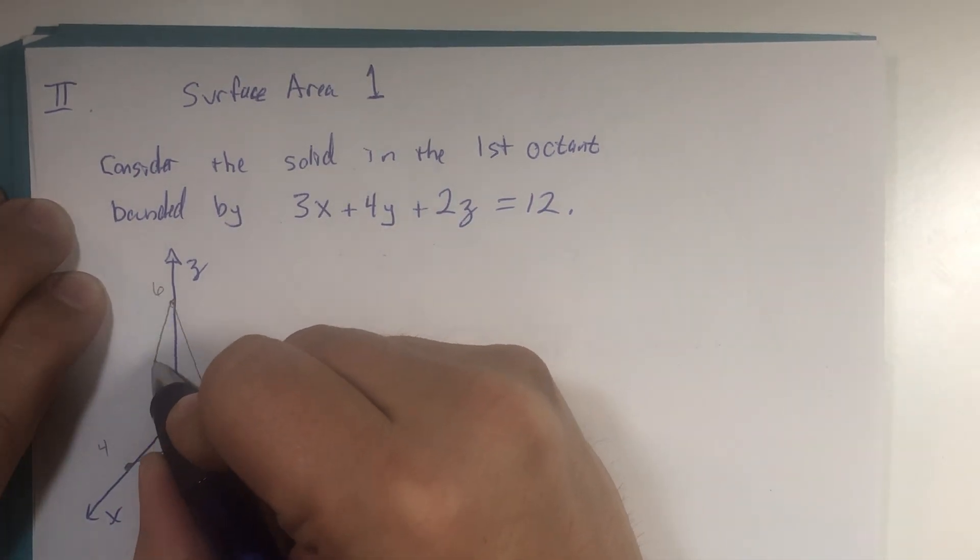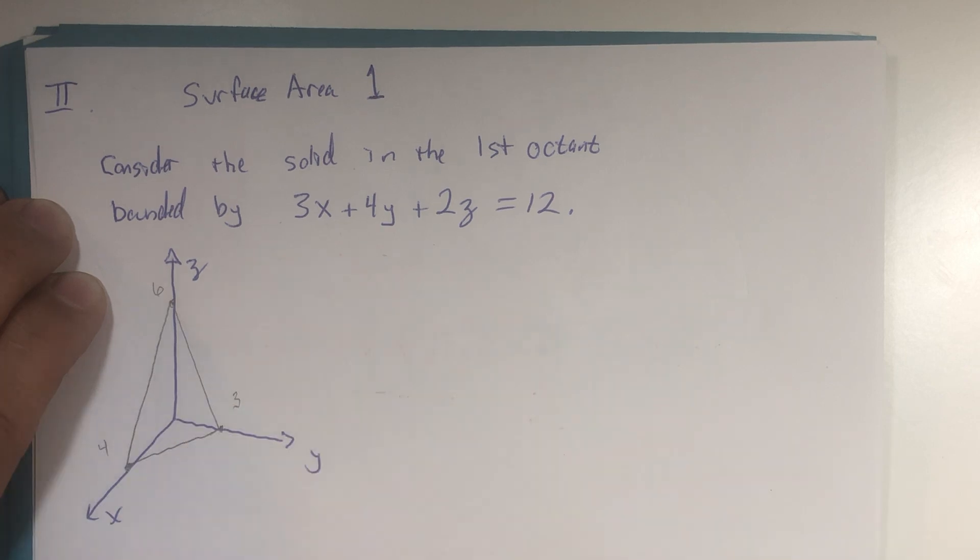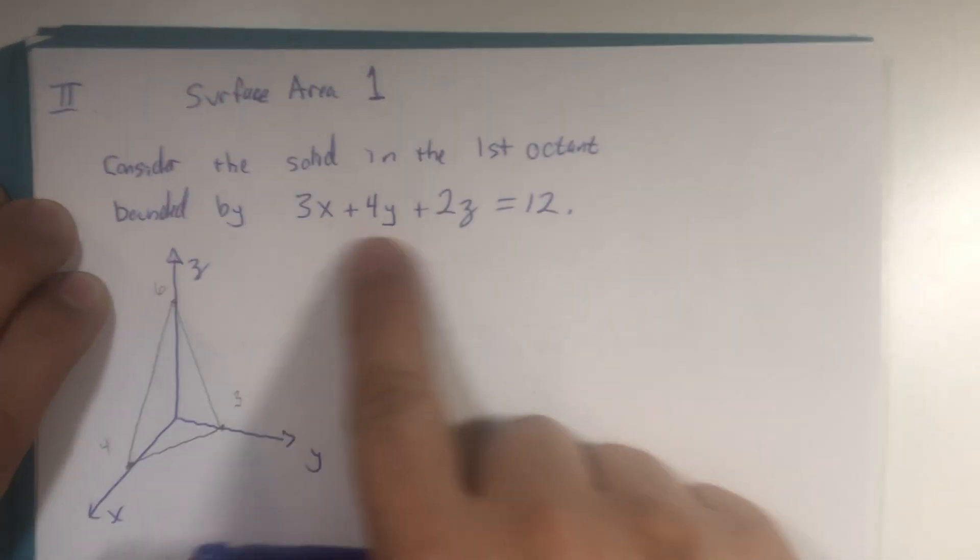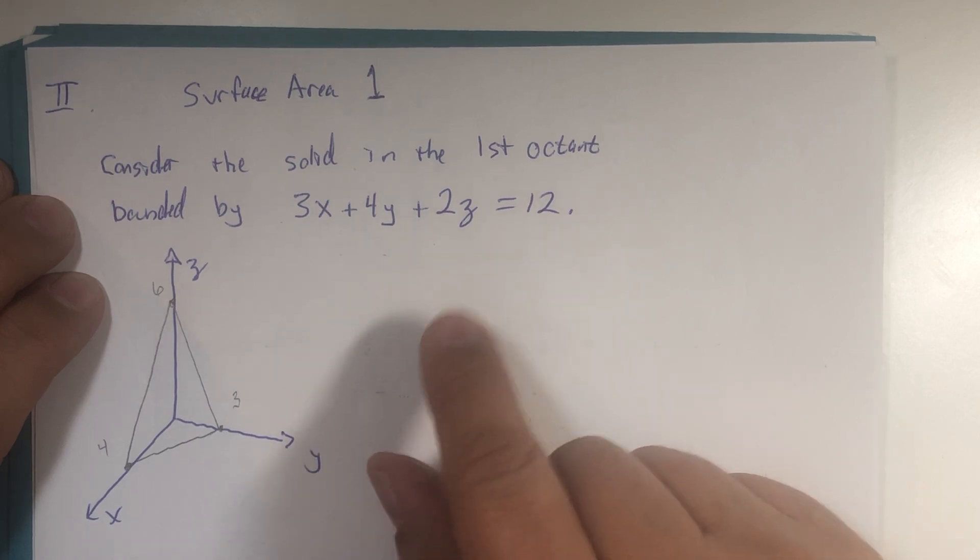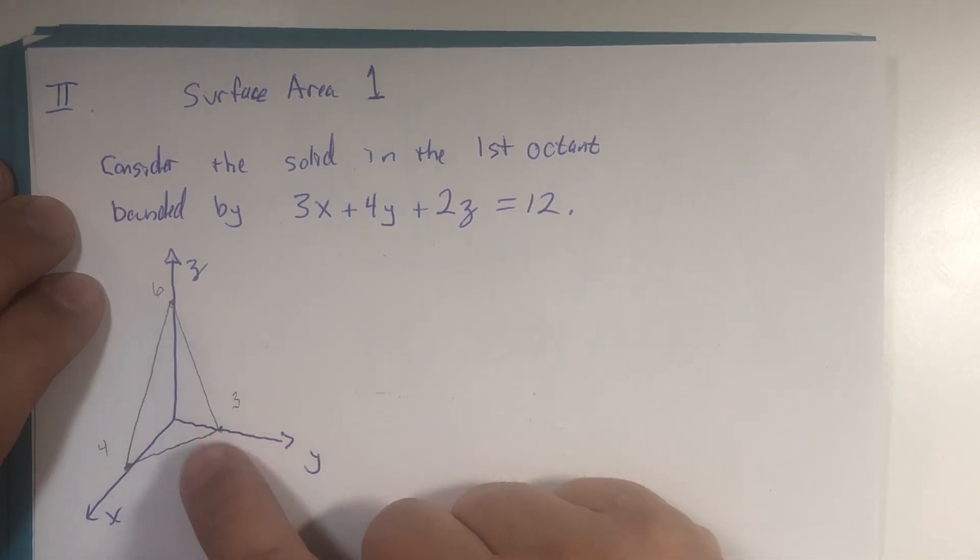And this triangle we used to represent a portion of the plane that this equation is. Now, in the first octant, where all x, y, and z values are positive, this solid shape, we actually can study more than one geometric interpretation of this right now.